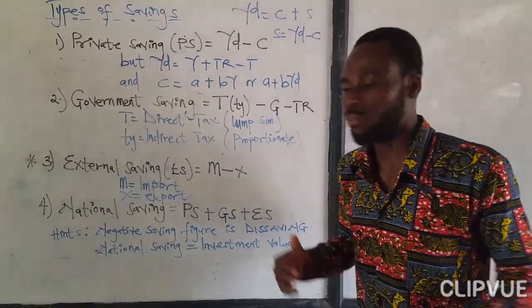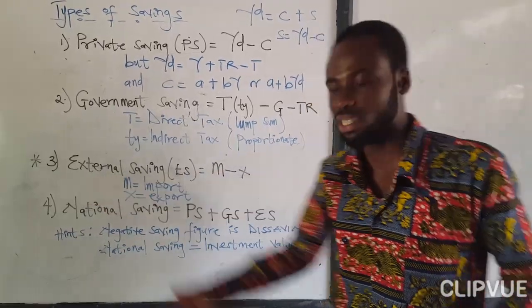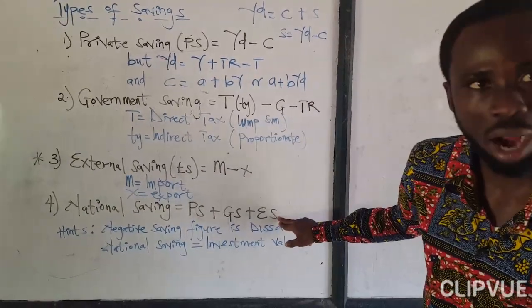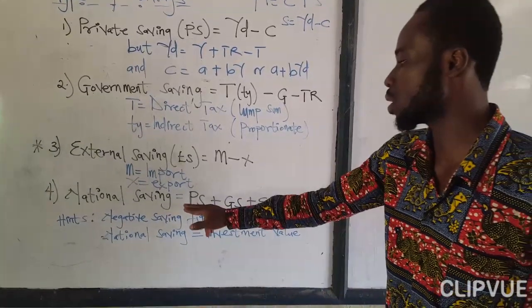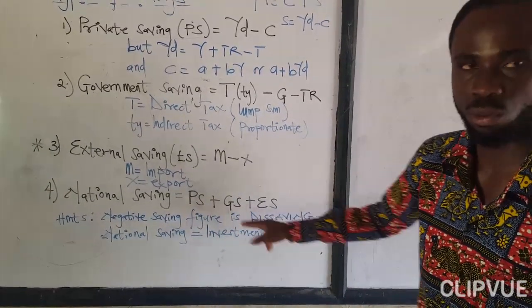But if the economy is closed, of which you don't calculate for external savings, it means that over here you are not going to add external savings. The national savings is going to be private savings and the government savings.